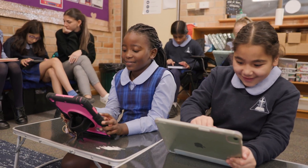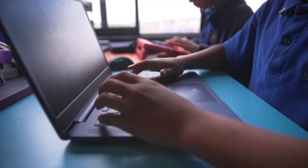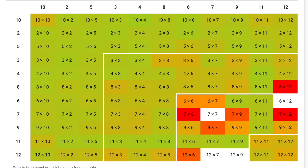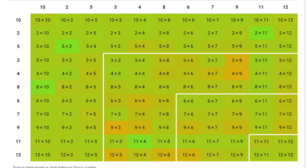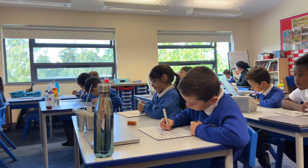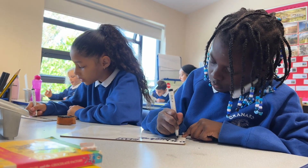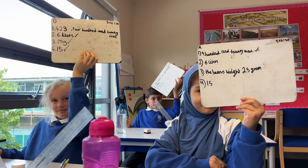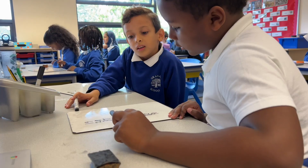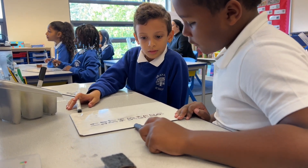TTRS takes a little and often approach to learning tables. Our data shows that just three minutes a day makes a huge difference in securing the Times Tables. Knowing the tables and their associated division facts supports mathematical learning and understanding, and those students who have a strong grasp of them tend to be more self-assured when learning new concepts in lessons.